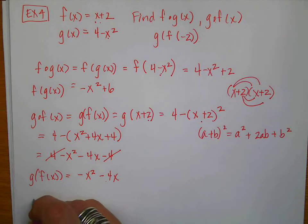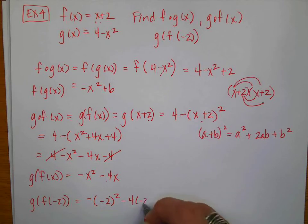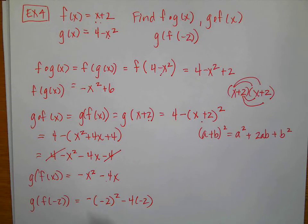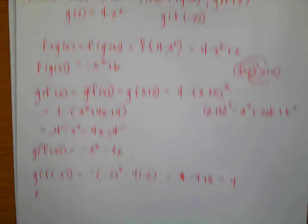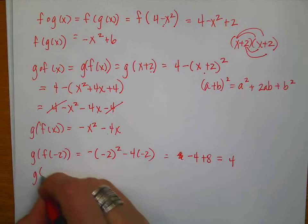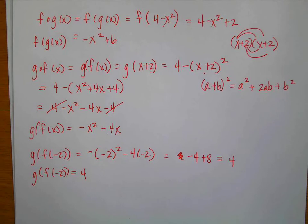Now I evaluate g(f(x)) at x = −2. So g(f(−2)) = −(−2)² − 4·(−2) = −4 + 8 = 4. Reporting the answer: g(f(−2)) = 4.